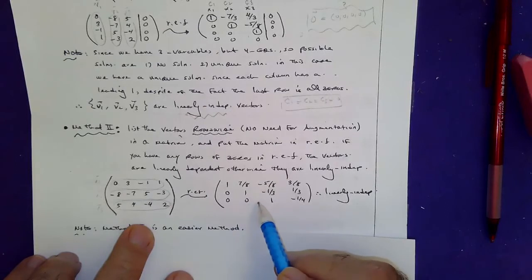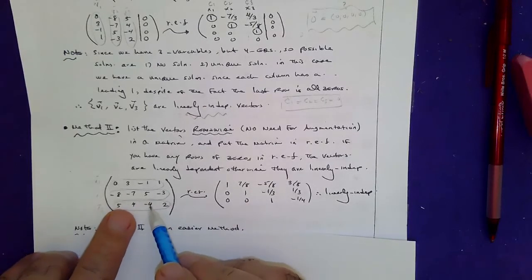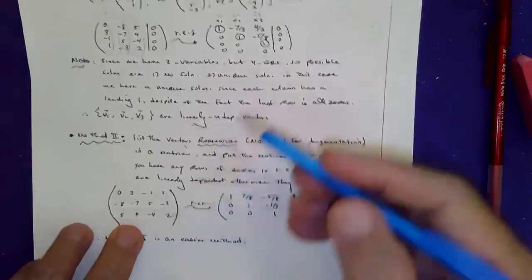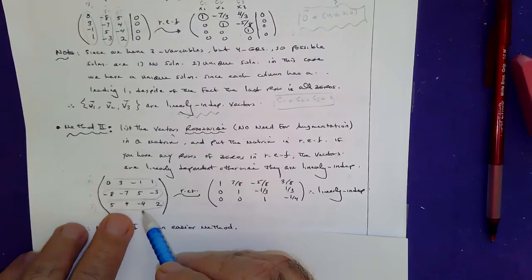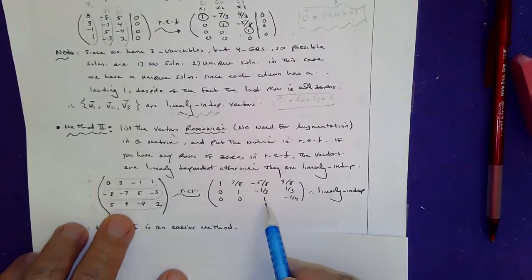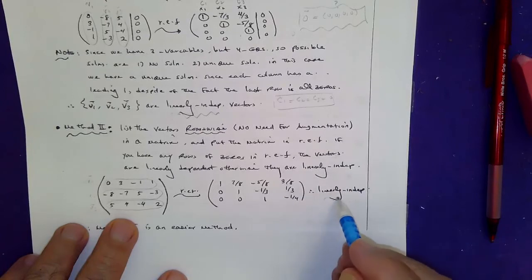And check and see if the row echelon form of the matrix which you came up with. Notice I no longer have zero, zero, zero. This is purely the vectors themselves. If you have in the row echelon form no zero rows, then they are linearly independent.